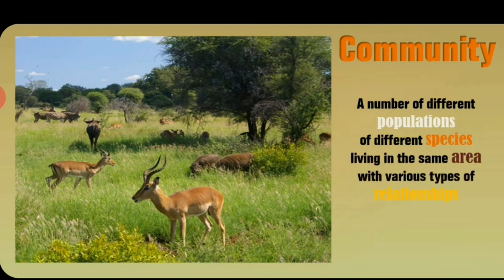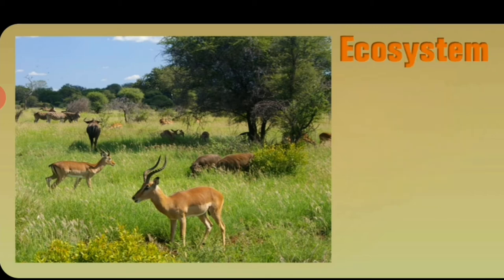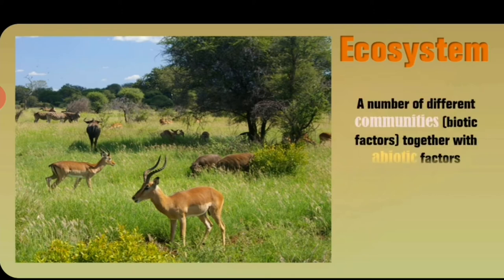There are various types of relationships between these organisms. This together forms an ecosystem, which is the number of different communities together with all the abiotic factors in the area.